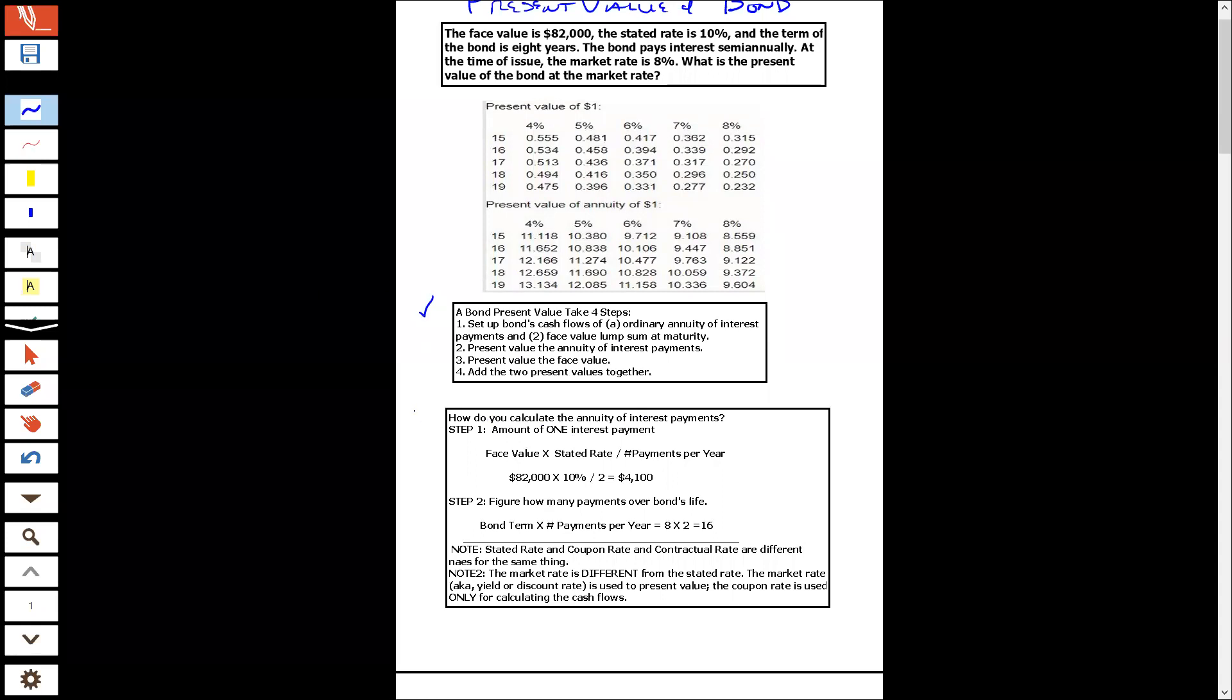So down here, first thing we have to do is calculate the annuity of interest payments. So this is not the present value. This is just what is the annuity of interest payments. So we're just going to get one payment. It's the face value times the stated rate divided by the number of payments per year. So in this case, we have 82,000 times the stated rate of 10 percent divided by 2. So 10 percent times 82,000 is 8,200 divided by 2 is 4,100.